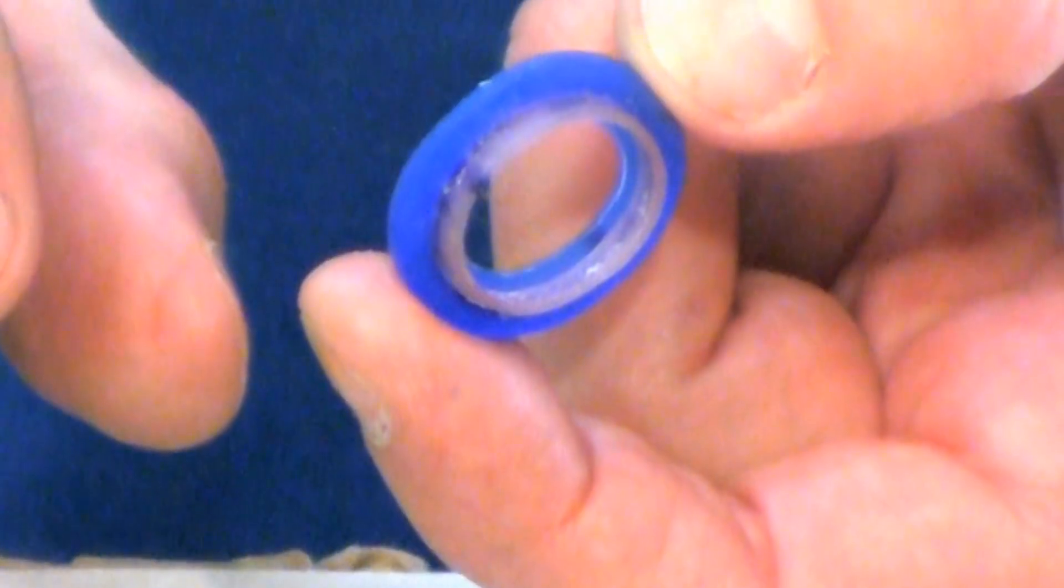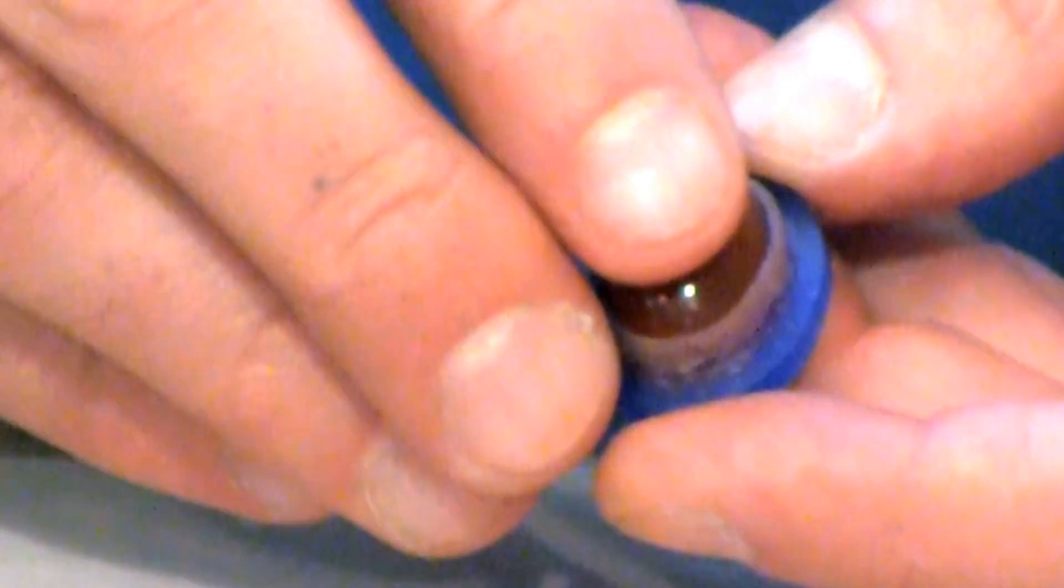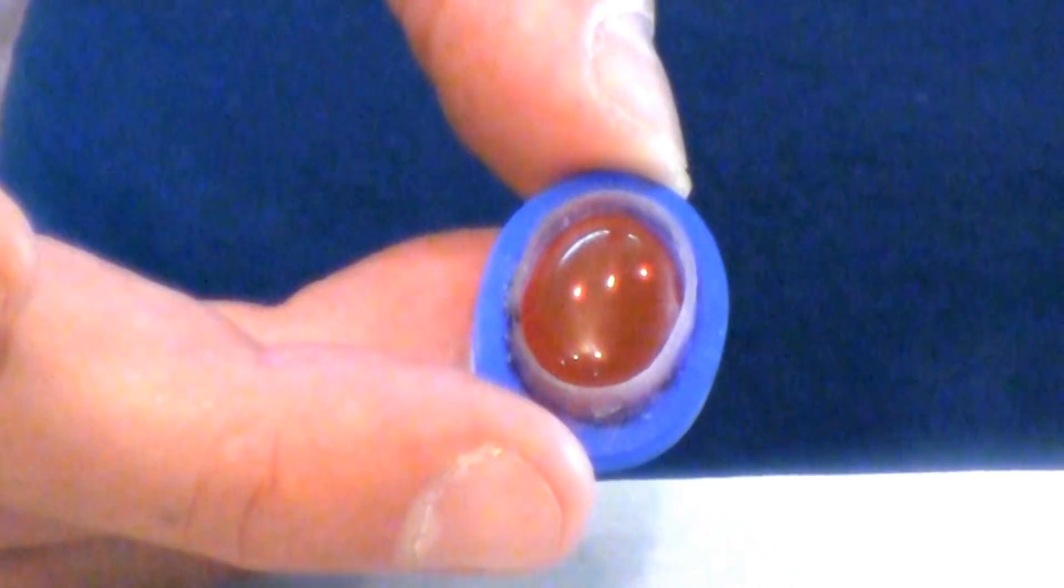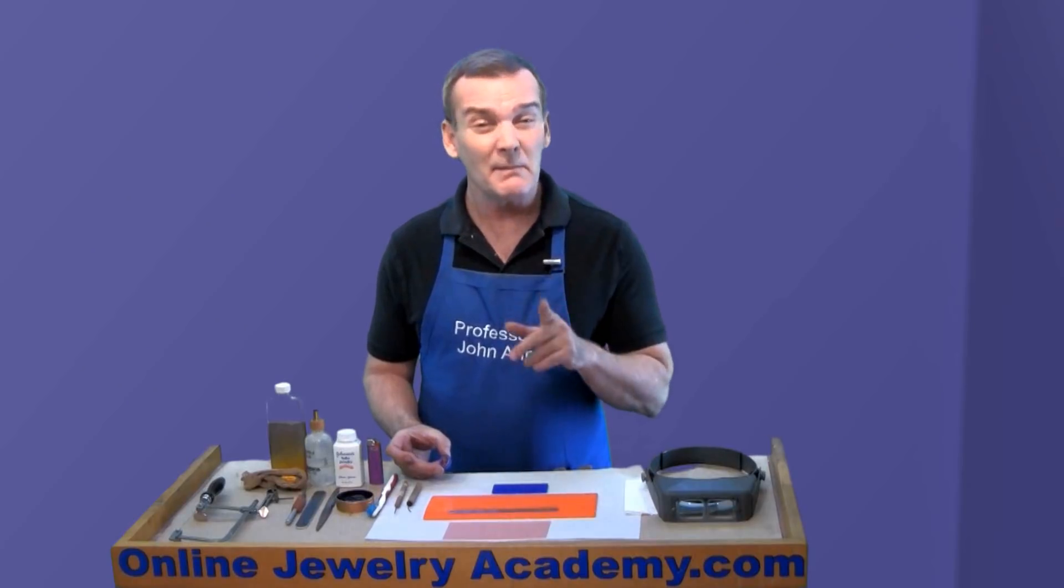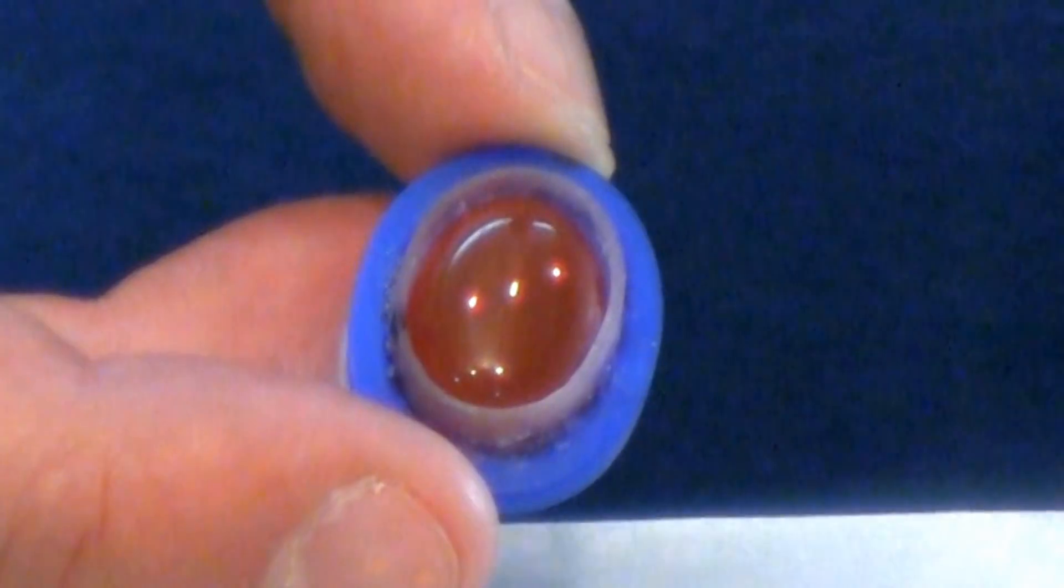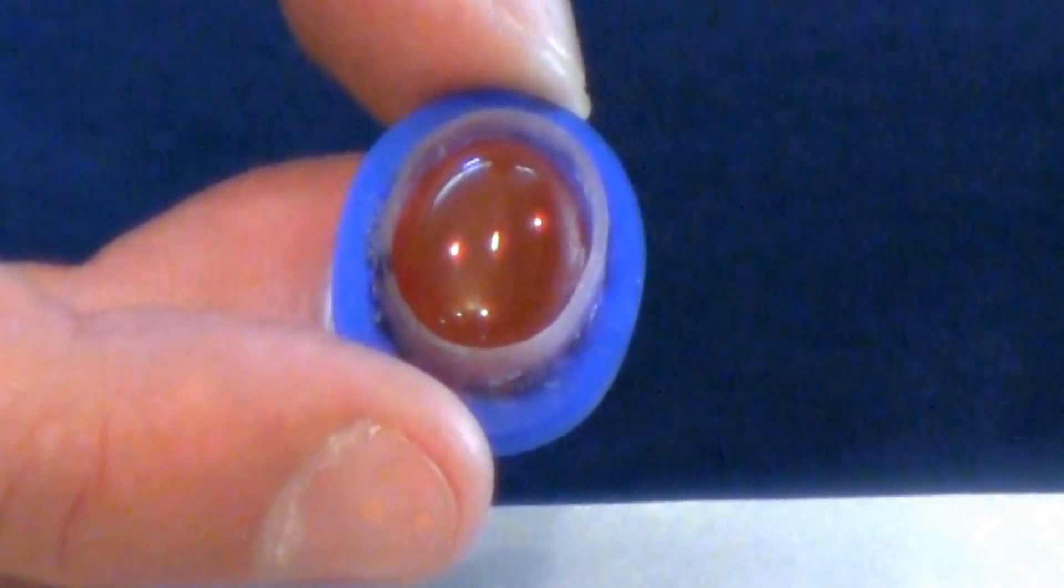Oftentimes, manufacturers of costume or fashion jewelry, if they're producing thousands of pieces, they need something that's quick and easy to set stones in. They may not always set them, they might glue them into place, but this will give them a great armature for holding a stone on a jewelry piece.